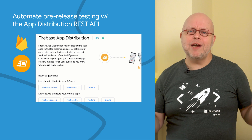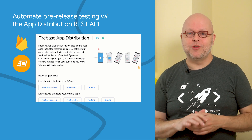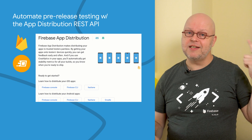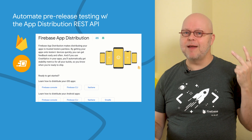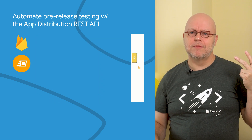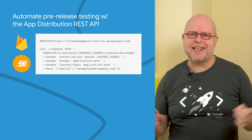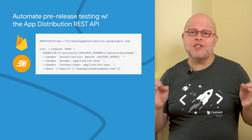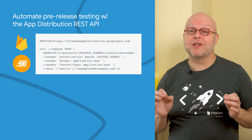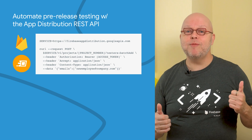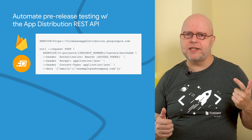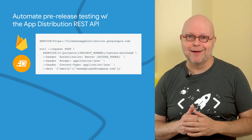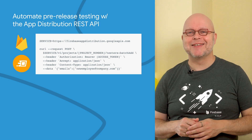With Firebase App Distribution, you could already distribute apps to testers using the Firebase console, the CLI, and plugins for Gradle and Fastlane. We just added a new REST API to App Distribution, so that you can build custom logic that matches your team's processes to add and remove testers, upload new app binaries, distribute releases, update release notes, and much more. Check the blog post for full details.